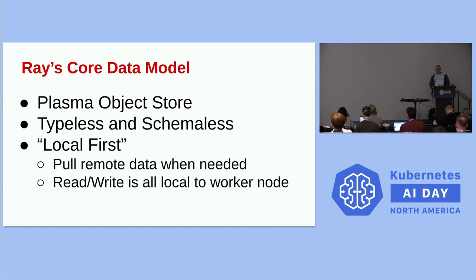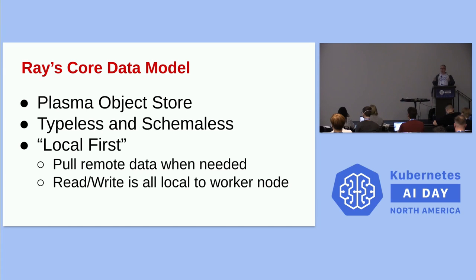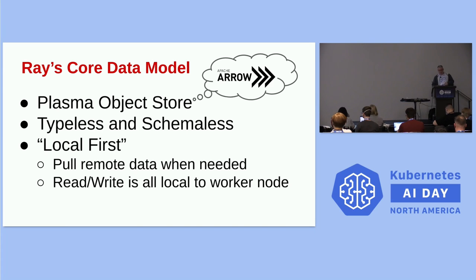Ray's core data model is implemented with the Plasma object store. Like Python, it is basically typeless and schemeless — just objects. It uses a local-first strategy, only pulling data from outside a worker node if needed, always trying to read and write local to worker nodes. The Plasma object store began its life in Ray but has since been adopted by Apache Arrow, so you can use Plasma via Arrow if you ever need to.